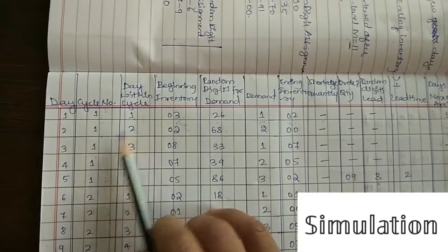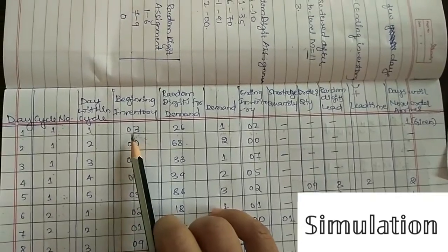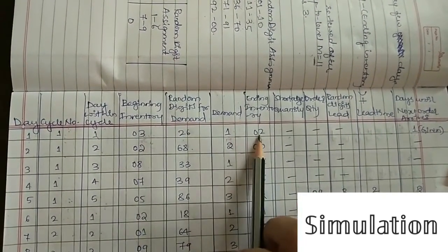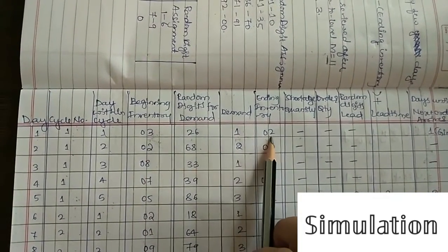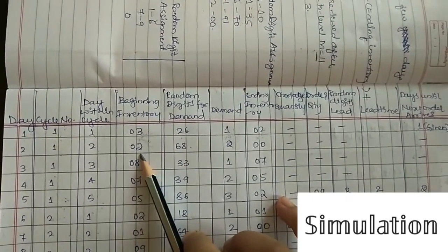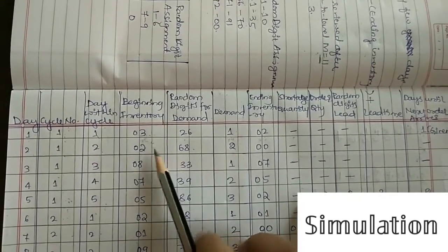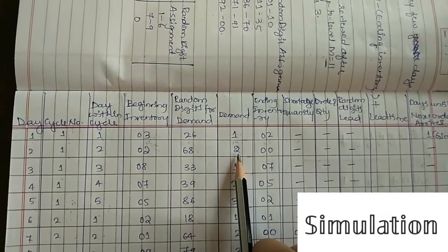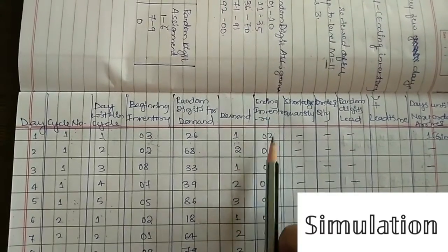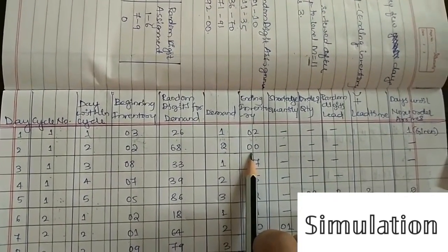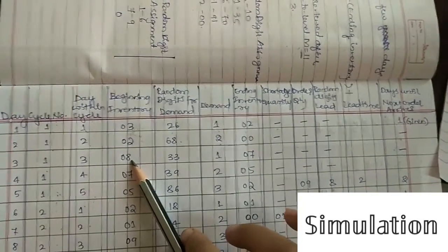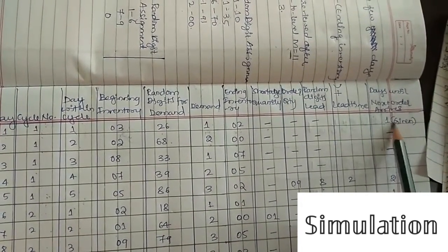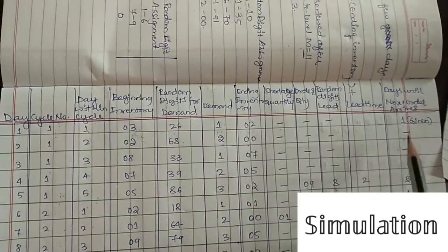Day 2 of cycle 1: beginning inventory is 2 (from previous day's ending inventory). Demand is 2 — we can supply it. Ending inventory is 0. Day 3: the beginning inventory shows 8. This is because an order was placed at the previous cycle end. Using the formula: order quantity = M − ending inventory + shortage = 11 − 3 + 0 = 8.